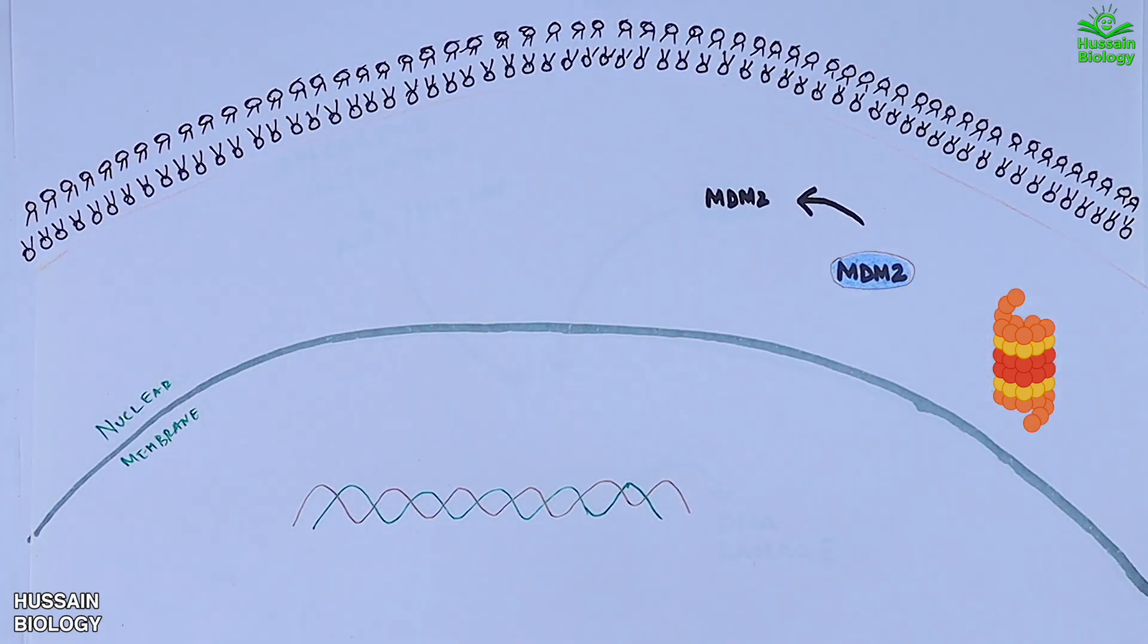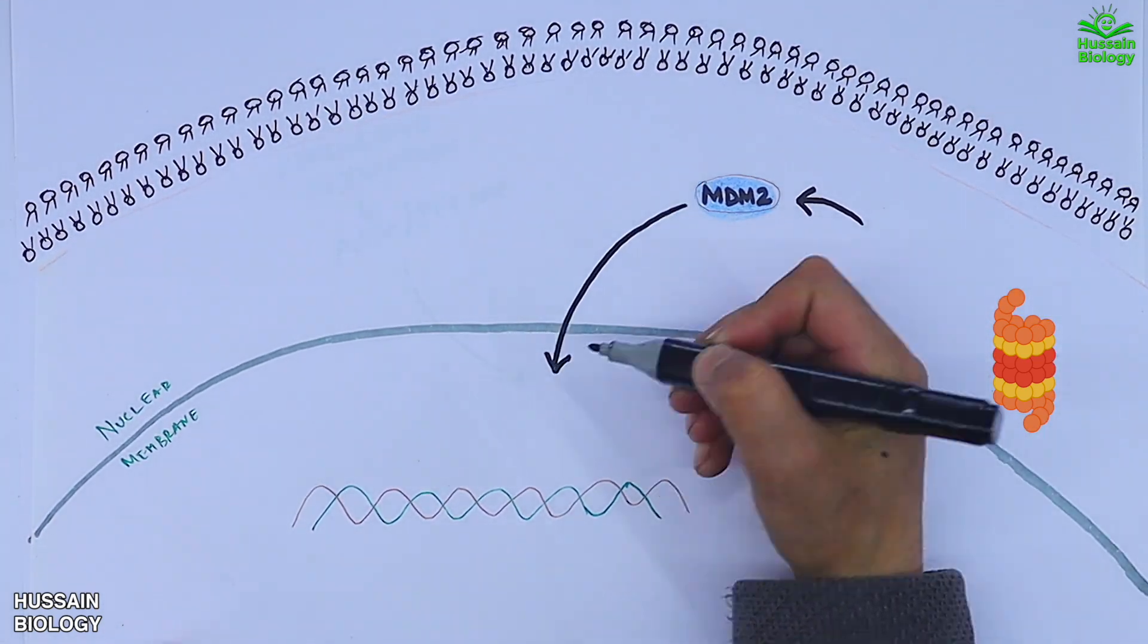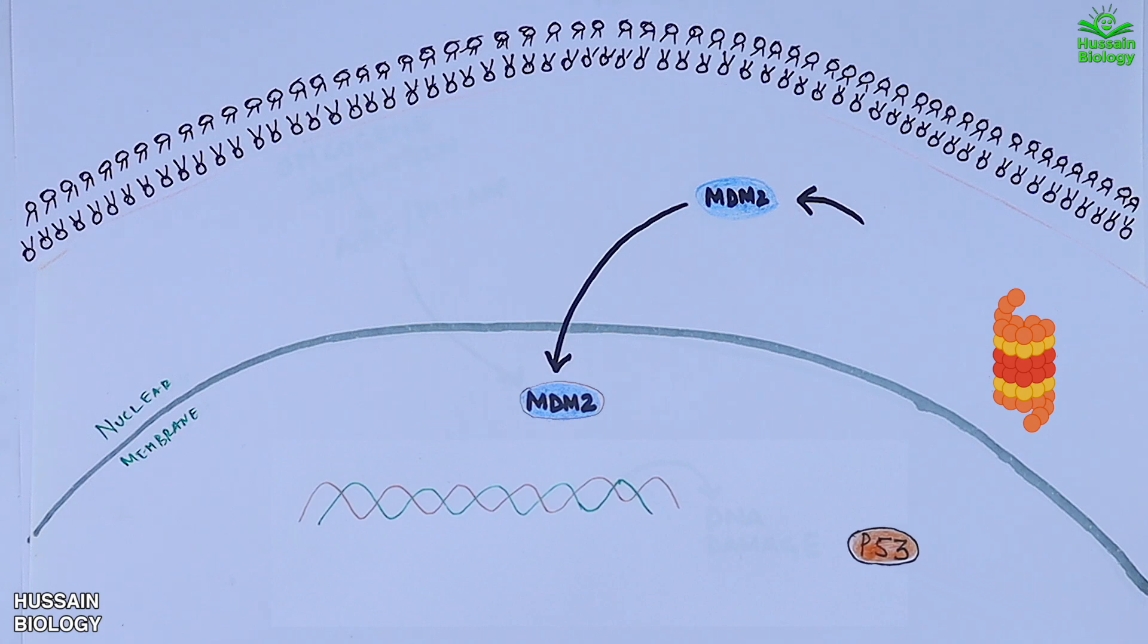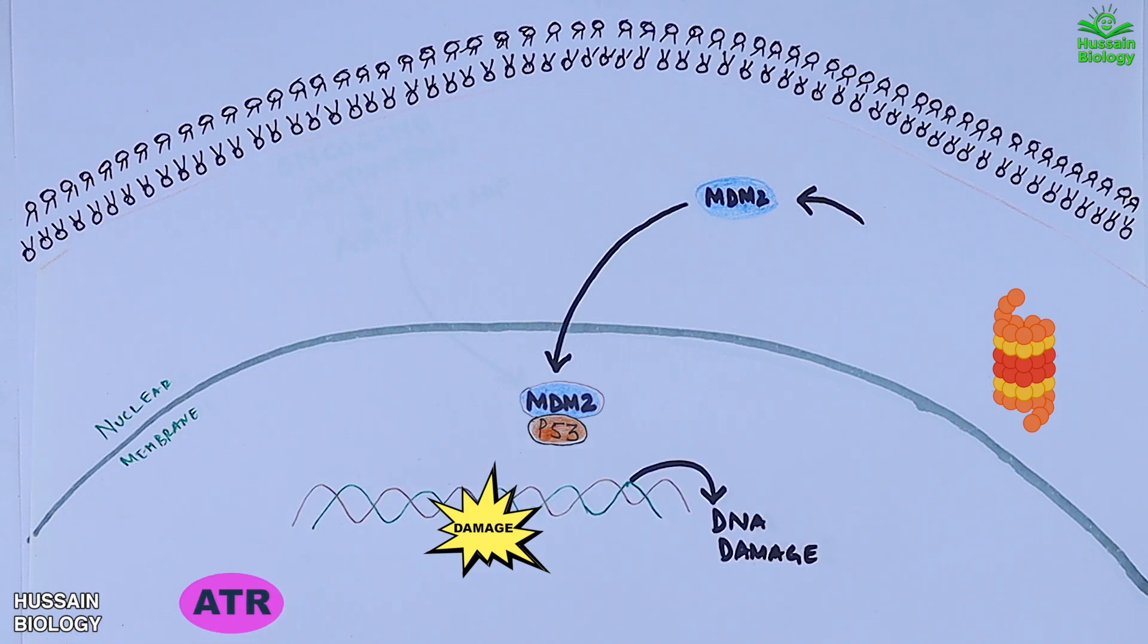So by this way the levels of p53 remain low in the cell when there is no stress or damage. But at the time of DNA damage, the ATR is recruited to the site of damage as shown in the animation.